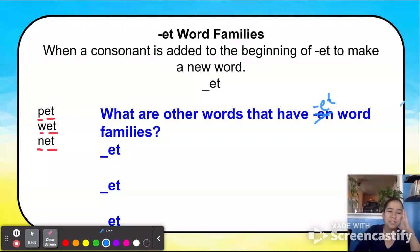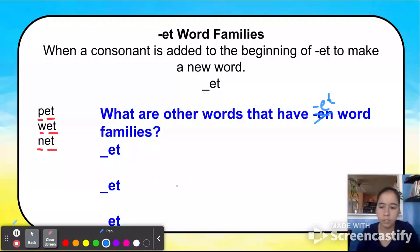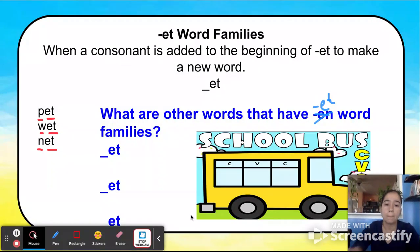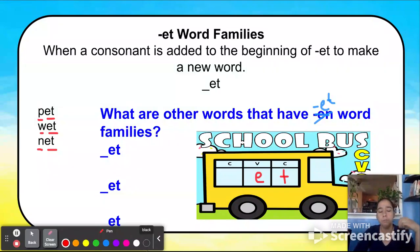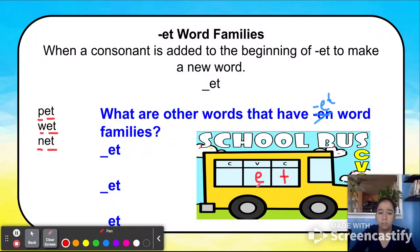What are other words that have ET word families? Take your school bus chart, find the letter E and put it under the vowel, and T under the second consonant — this is our word family ET. Start building new words with ET word families.